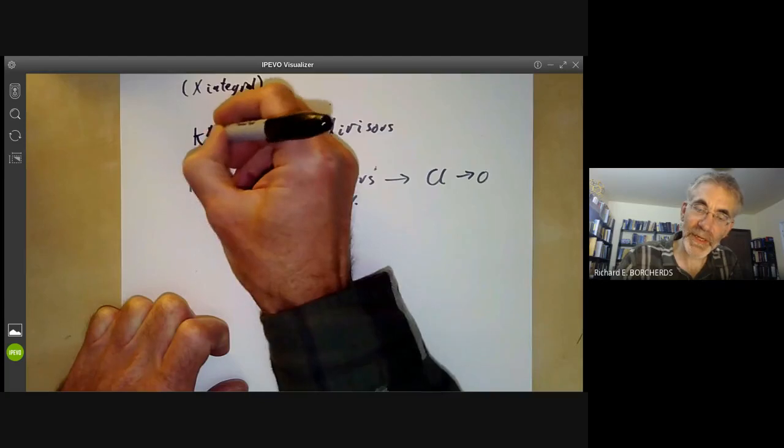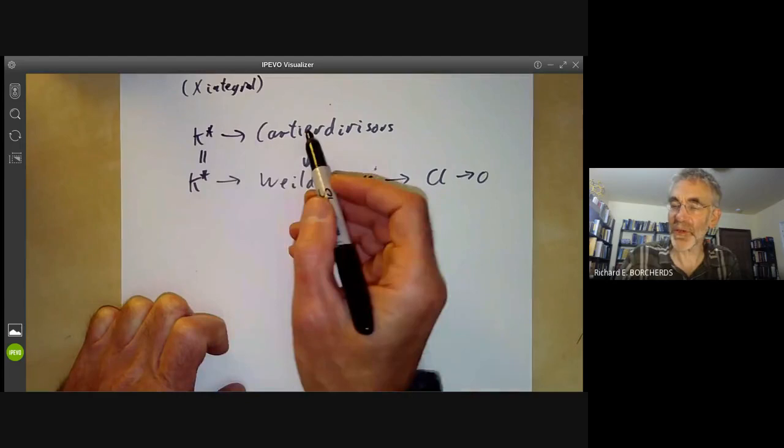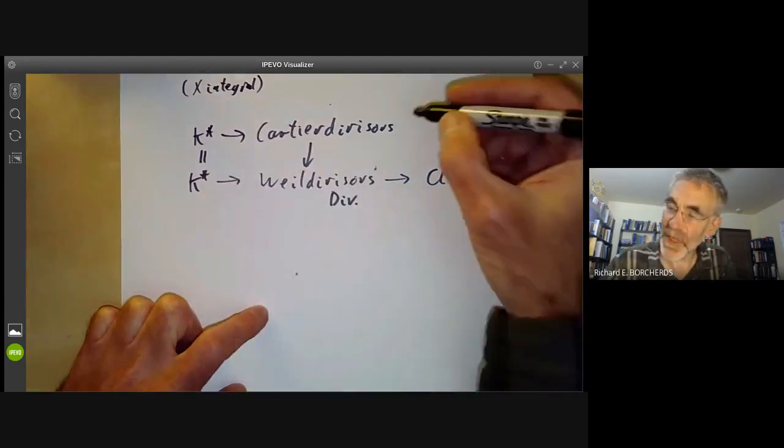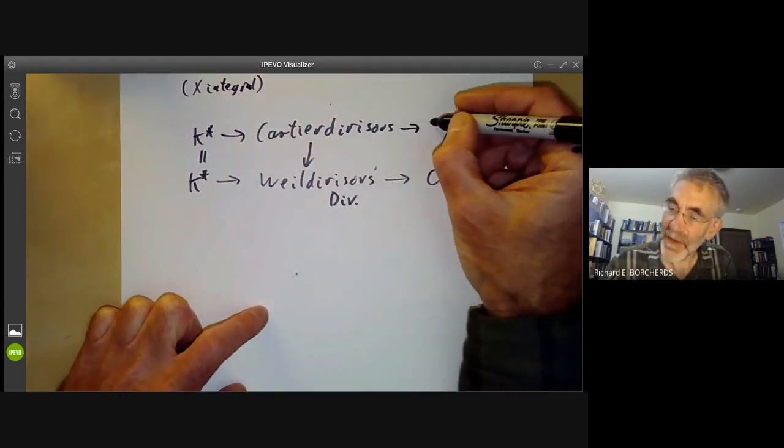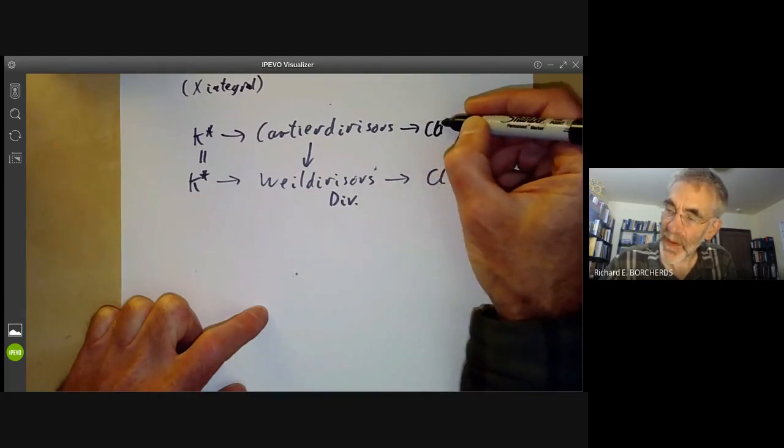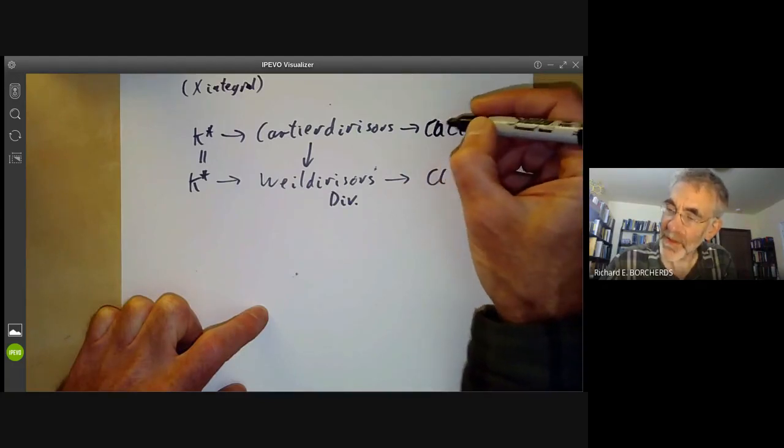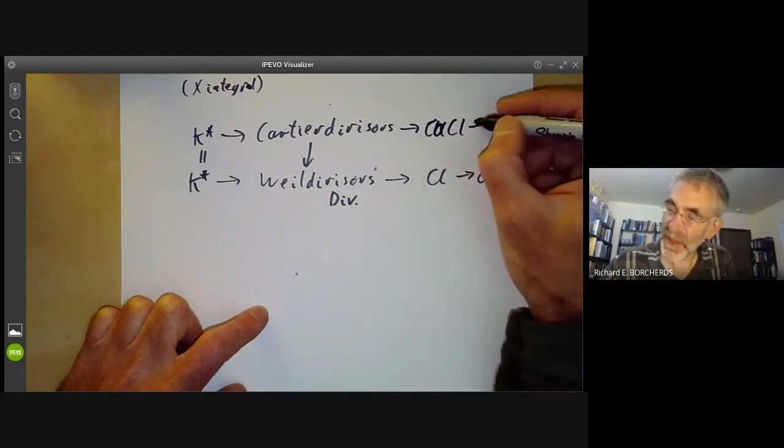Cartier divisors also have a map from rational functions on the scheme to them, again assuming the scheme is integral. And the quotient is going to be a group called the Cartier divisor class.